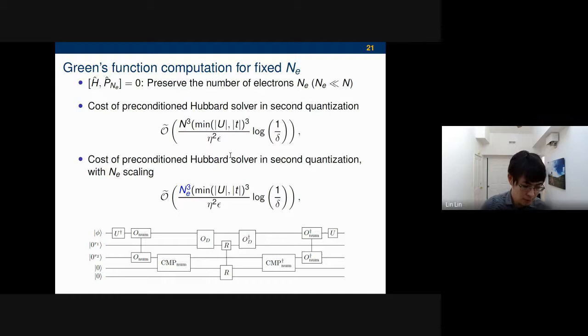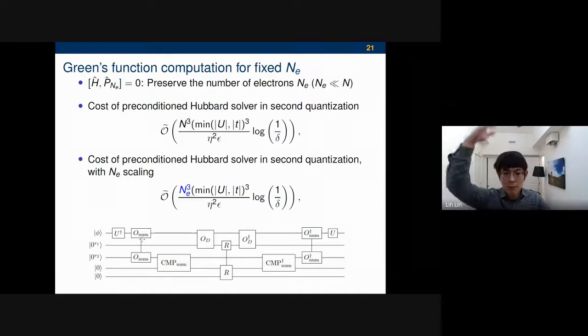If H preserves the number of electrons, which means H and the projection to any sector of the Hamiltonian, these two operators commute, then the number of electrons, or whatever operation you do, would preserve the number of electrons. If the number of electrons is much smaller than n, if you directly do the preconditioned Hadamard solver, then the cost would have a polynomial dependence on the number of spin orbitals, but you can actually reduce this to n_e cubed. The basic idea is exactly as Wenhao said, that you can easily use classical arithmetic to count the number of electrons, and if it is inside what you want, you do something. If it is outside, then you just discard it instead of putting a very big penalty there. And this is the quantum circuit for one part, which is the non-interacting part.